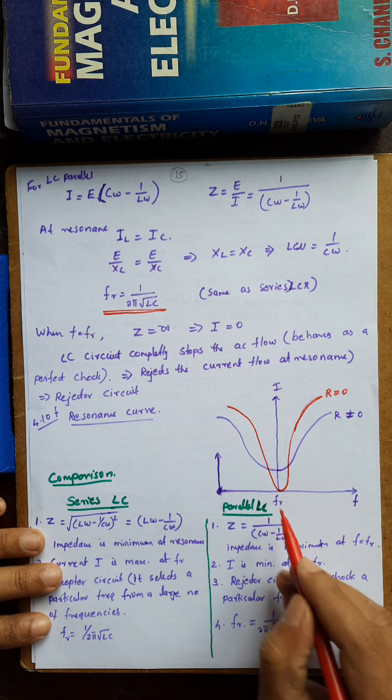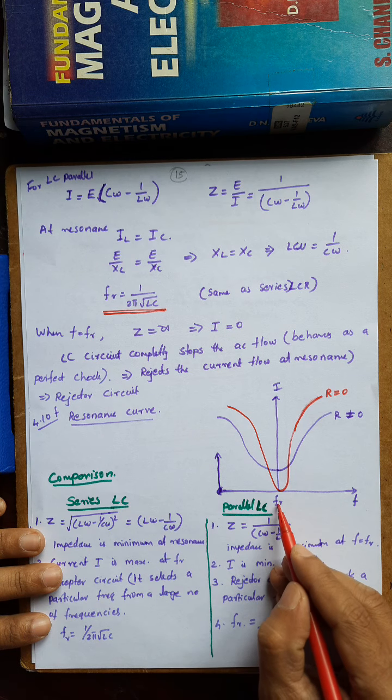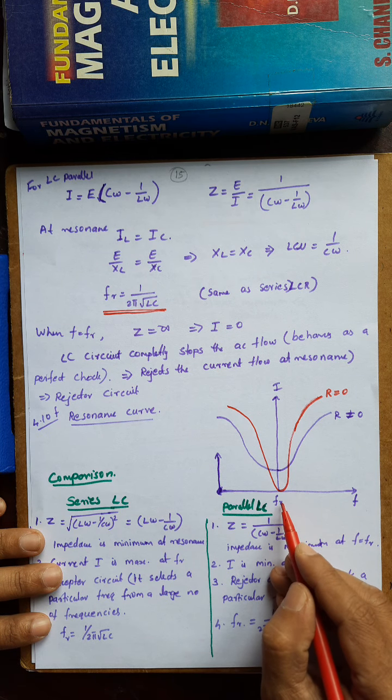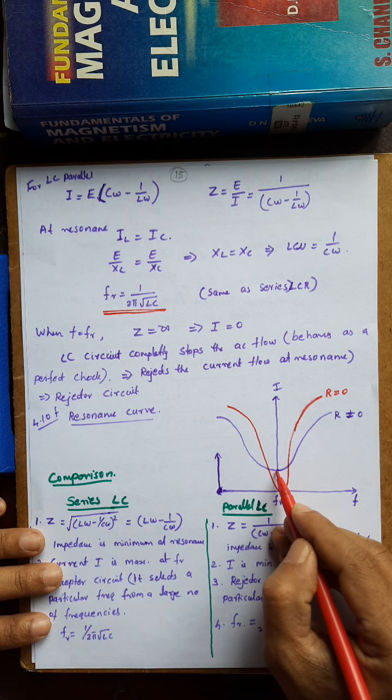At F equal to FR, at the resonance frequency, the current will be minimum.